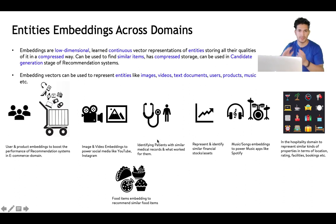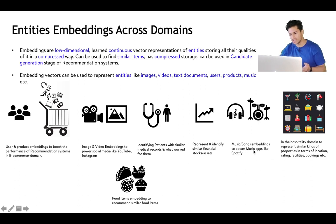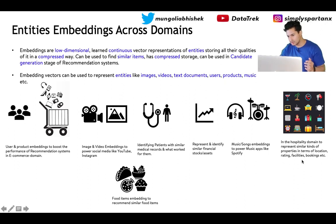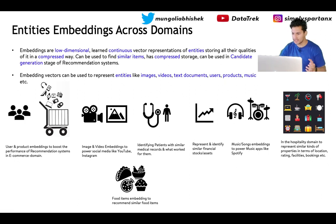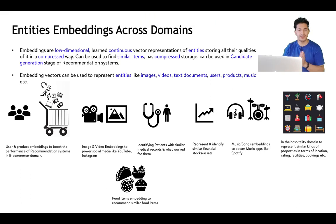In the hospitality domain, embeddings are generated for properties that are similar in terms of location, rating, facilities, and bookings. In the food industry, similar food items a user usually eats can be recommended. Embeddings have vast use cases across domains.